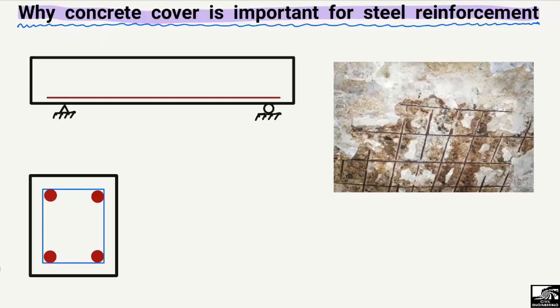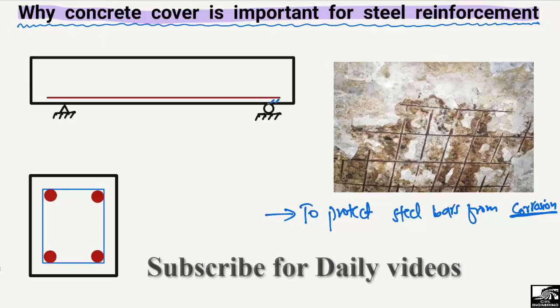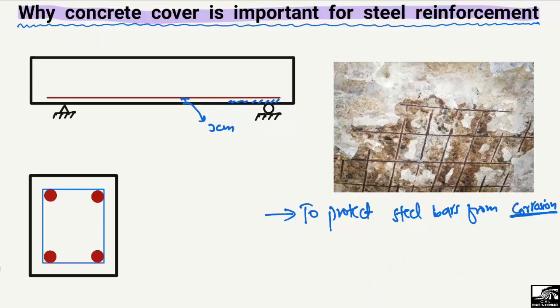The main reason to provide concrete cover for the steel bar is to protect the steel reinforcement from the corrosion phenomenon. This is the main factor for providing the concrete cover. Here we can clearly see that we provide a concrete cover — the distance between the steel bar and the outside of the concrete may be two or three centimeters, depending on different factors. This provides protection for the steel bars from the outer surface of the concrete.